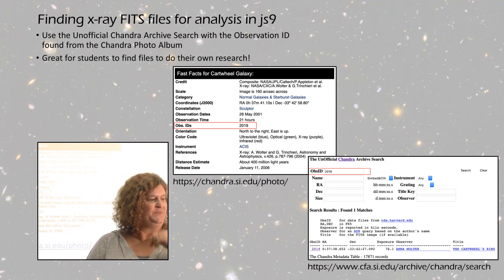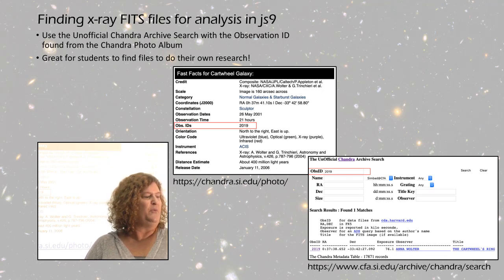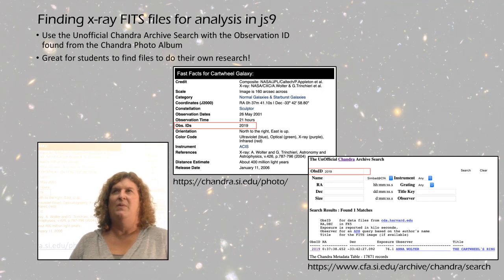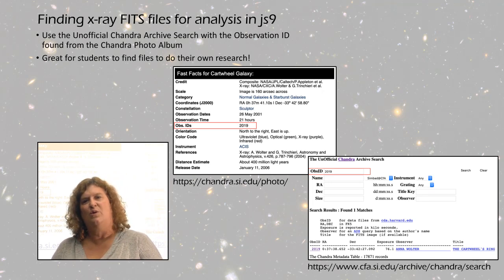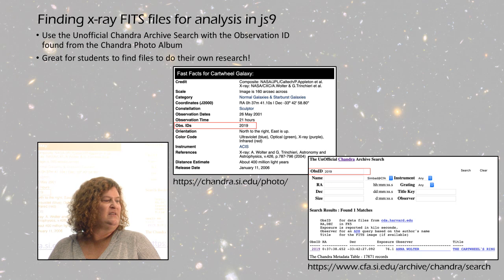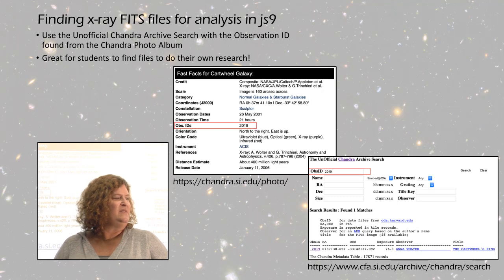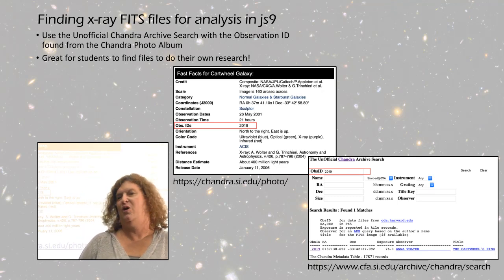One place is the Chandra photo album. The URL is at the bottom left. The photo album is organized by date and by type of object, so there's a section on supernova or galaxies. When you go to those press releases, there's usually a fast facts section at the bottom, and outlined in red is the observation ID for the Cartwheel Galaxy. This particular one was 2019.